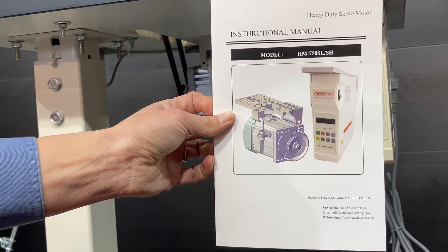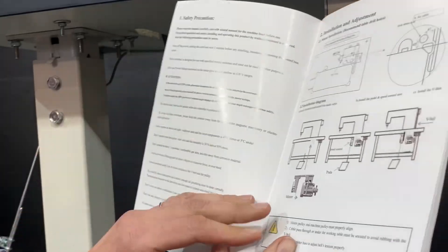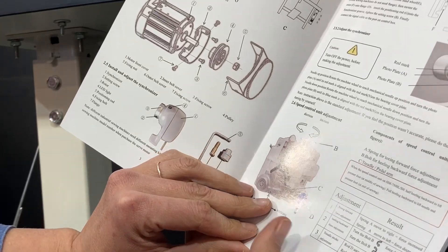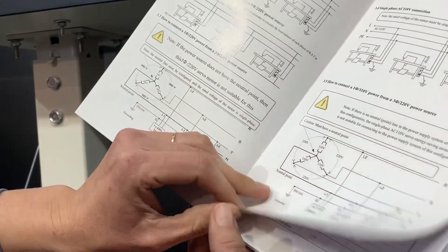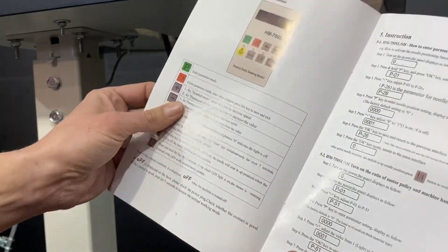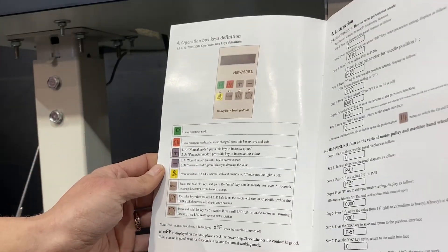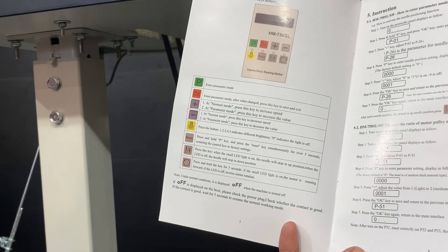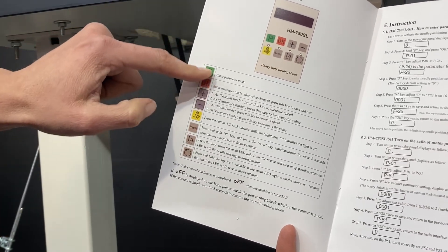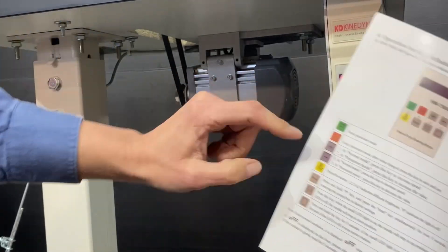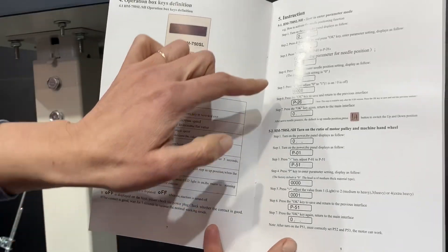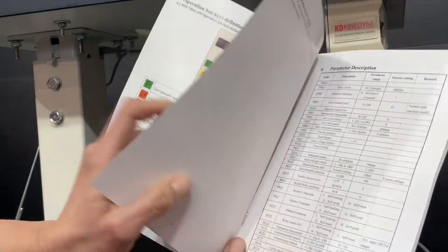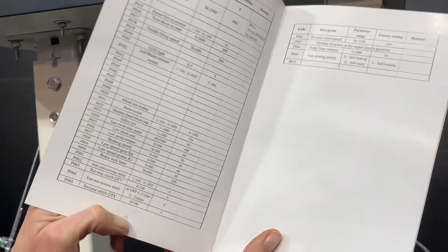So the motors come with this instruction manual which just has some basic instructions and some technical diagrams. What we mostly would want to look at is here on page 7. It describes the buttons on the screen and an example of how to edit the parameters, and then a list of all the parameters.